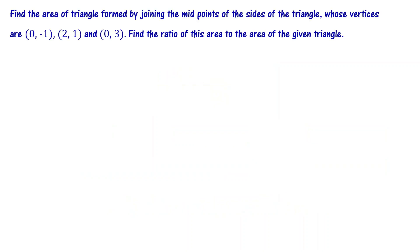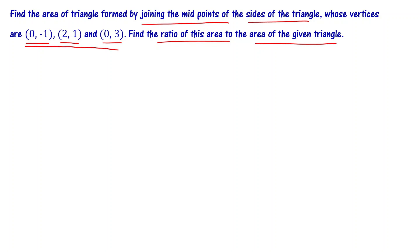Find the area of the triangle formed by joining the midpoints of the sides of the triangle whose vertices are (0, -1), (2, 1), and (0, 3). Find the ratio of this area to the area of the given triangle. In this problem, there are two triangles. The first triangle has coordinates (0, -1), (2, 1), and (0, 3). The second triangle is formed by joining the midpoints of the sides of the first triangle.